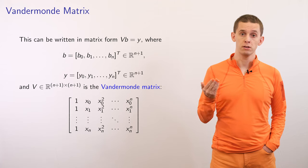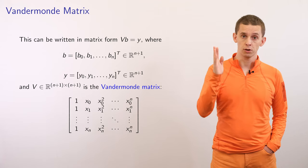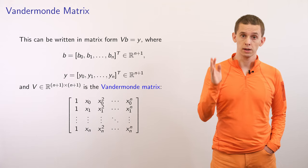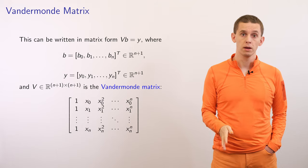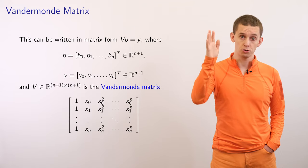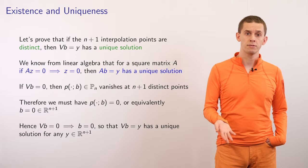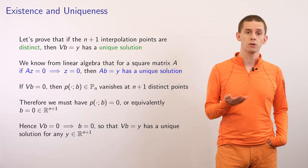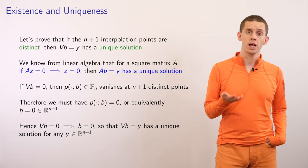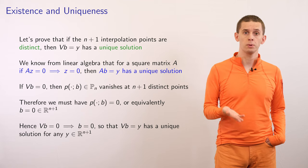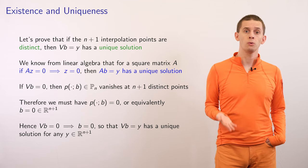V is the Vandermonde matrix, defined with a column of ones in the first column, the x values to the first power in the second column, the x values squared in the third column, and so on. Before solving the Vandermonde system, let's ask whether a solution exists and if it will be unique. It turns out that for any n plus 1 distinct interpolation points, the Vandermonde system vb equal y will always have a unique solution.